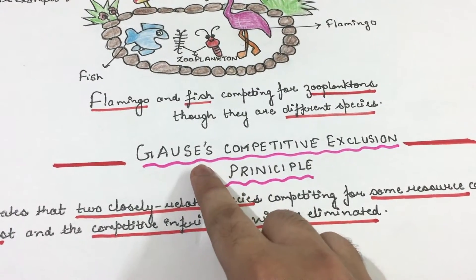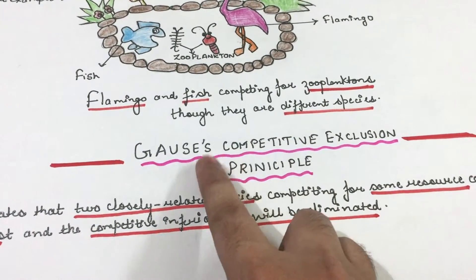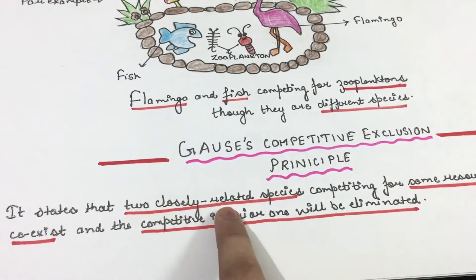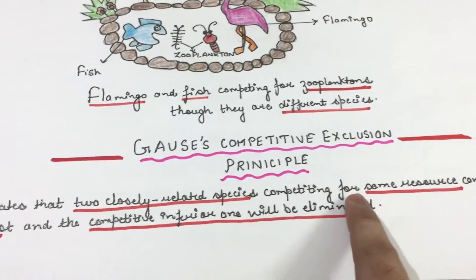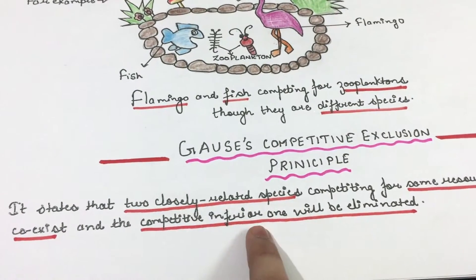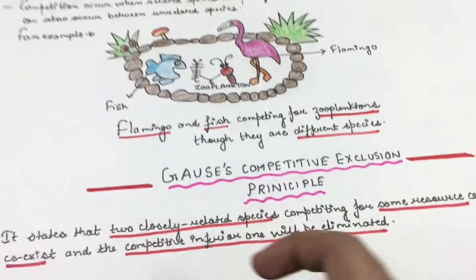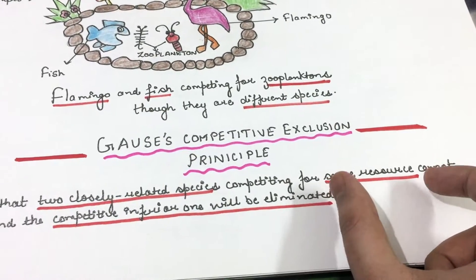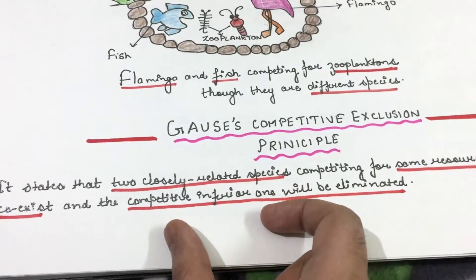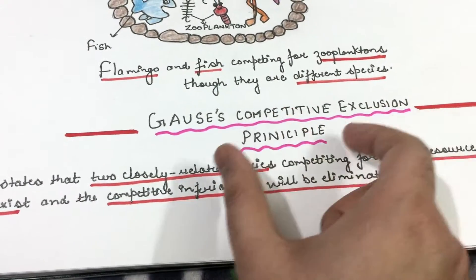Now let us look at what is Gauss's competitive exclusion principle. It states that two closely related species competing for the same resource cannot co-exist, and the competitively inferior one will be eliminated.